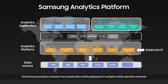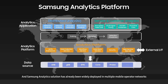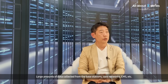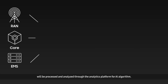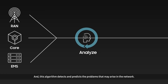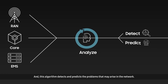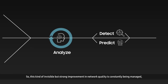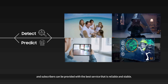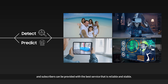Samsung's analytics solution has already been widely deployed in multiple mobile operator networks, and it is helping them to increase their operational efficiency. The large amount of data collected from the base stations, core networks, EMS, etc., will be processed and analyzed through the analytics platform using AI algorithms. This algorithm detects and predicts problems that may arise in the network, so this kind of invisible but strong improvement in network quality is constantly being managed, and subscribers can be provided with the best service that is reliable and stable.